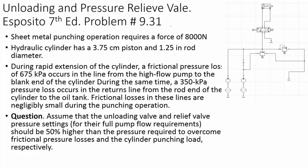This is a problem from the textbook by Anthony Esposito, 7th edition, chapter 9. This is an example of unloading and pressure relief valve setting. In this example, there is a sheet metal operation done by a cylinder. In this video, I will show you how to set up the unloading valve pressure setting and the pressure relief valve pressure setting.